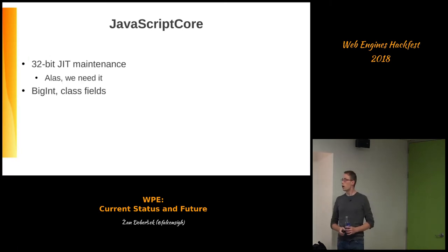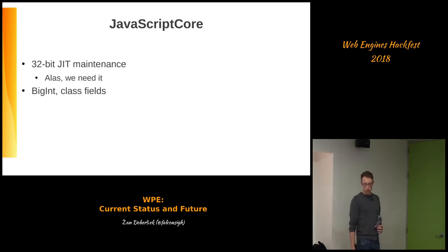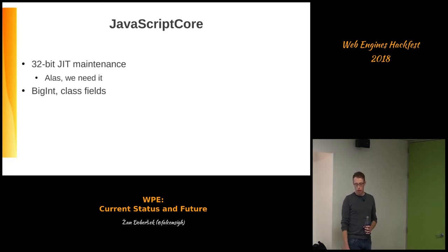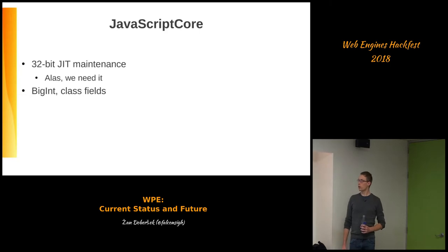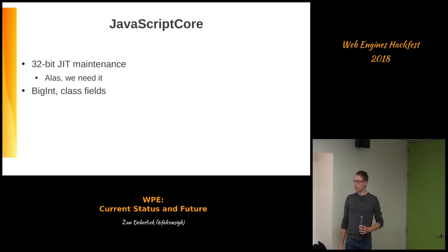As for JavaScriptCore, the areas where we see our WebKit ports used a lot is unfortunately 32-bit hardware — ARM version 7 and MIPS. So we've put a lot of effort into maintaining JIT engines for those hardware platforms. Apart from that, we've already contributed a lot around BigInt. For class fields, if not concrete work, we've prototyped some of it.